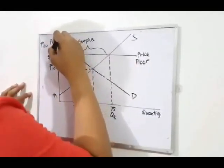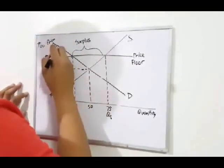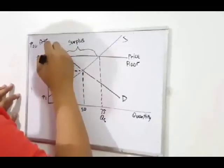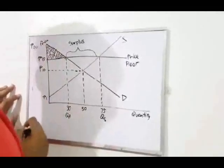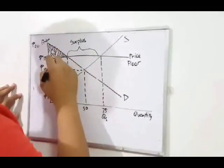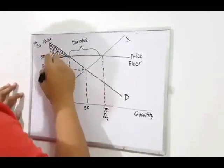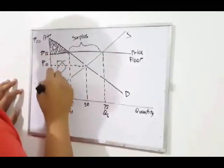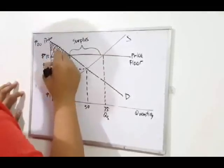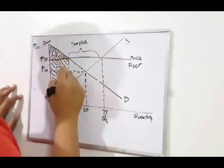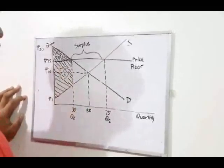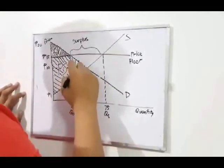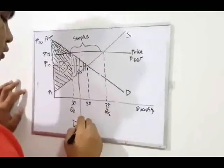In this area above the price floor and within the demand curve, that is called consumer surplus. The area below the price floor and within the supply curve up to the quantity demanded is the producer surplus. And in this area here, it will be called dead weight loss.